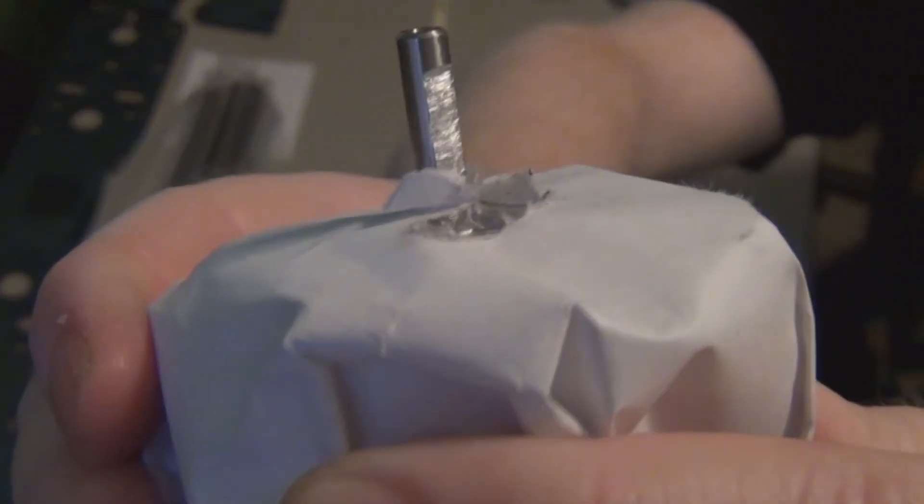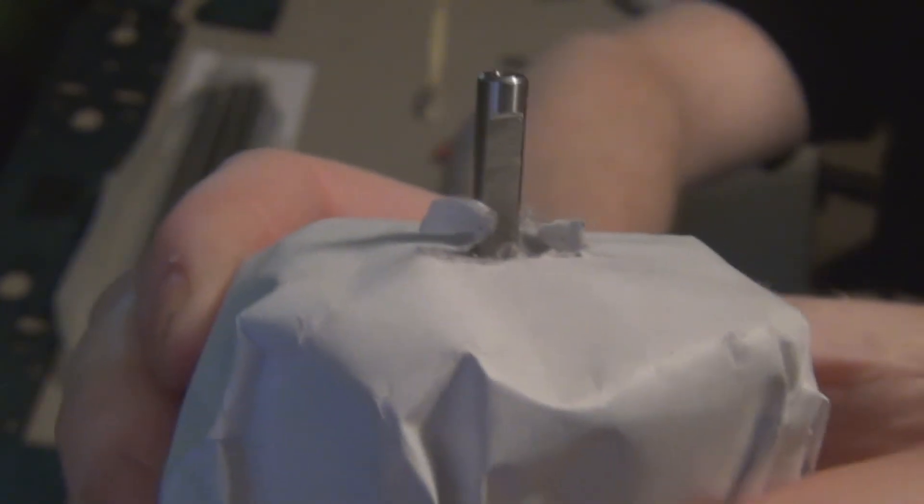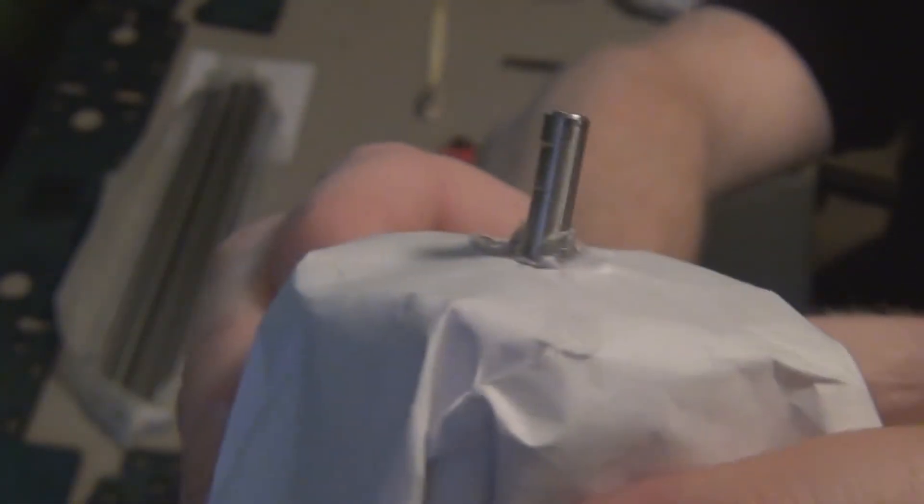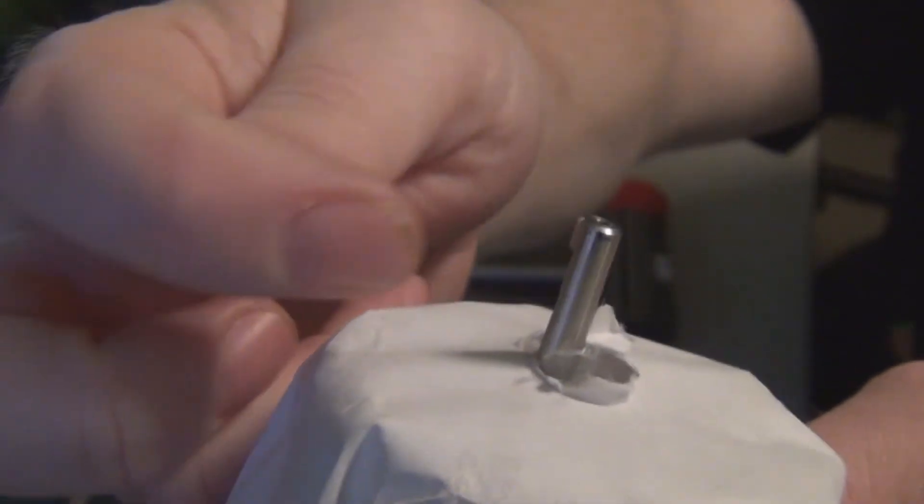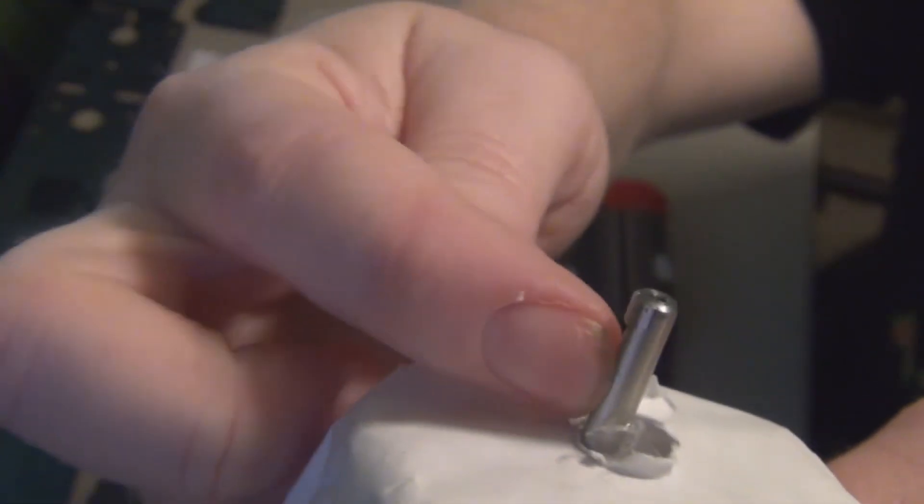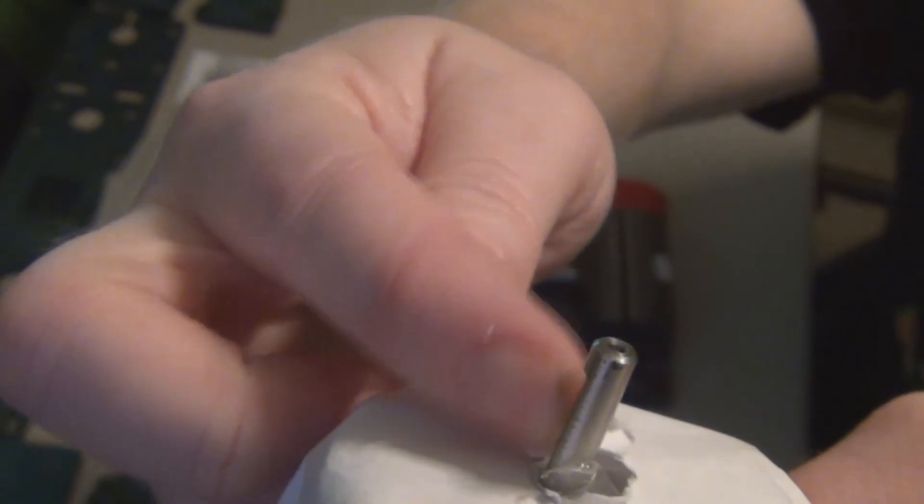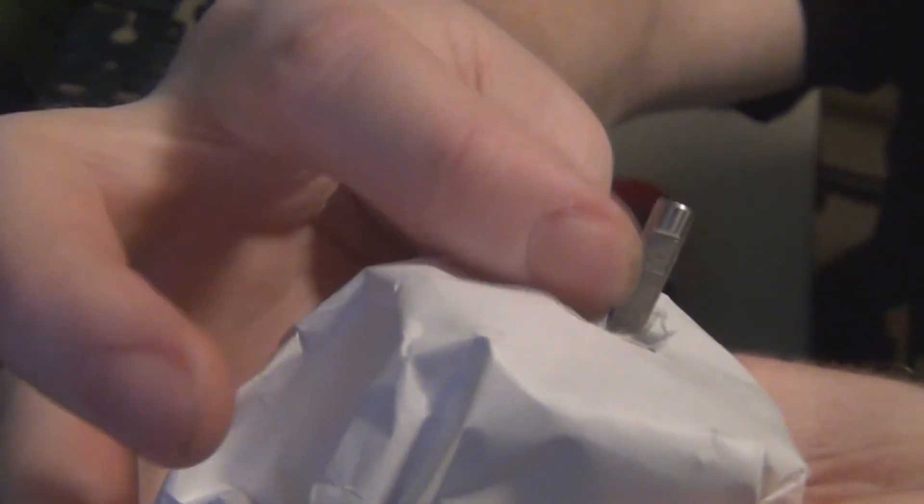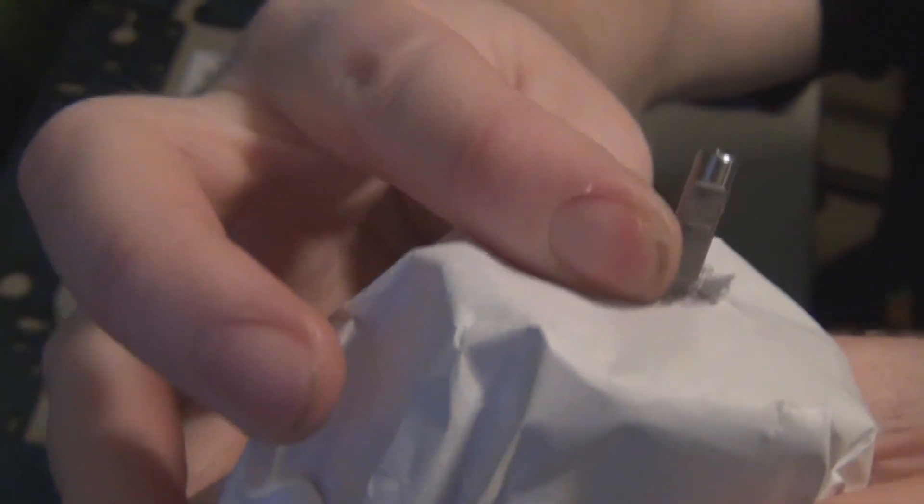And as you can see, it has a sort of notched surface in there, so that when the set screw actually comes through, it has something that it can engage that's flat. Instead of being a slippery cylindrical surface, it can actually engage with this flat part here. So that's kind of the whole point of doing this.